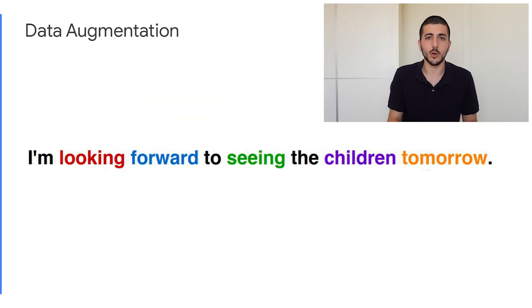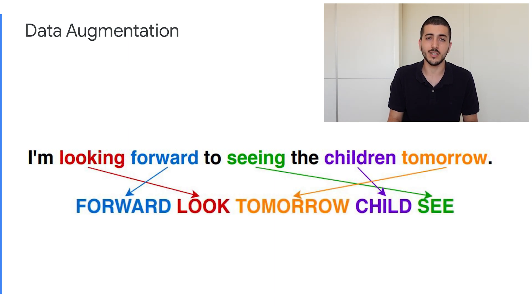Given a spoken language sentence, we first remove all non-content words, then we lemmatize and permute the remaining words to create a corrupted sentence in the lexical format of gloss. However, general rules might not always be enough. For the two sign languages we experimented with, we also designed language-specific rules based on their syntax.